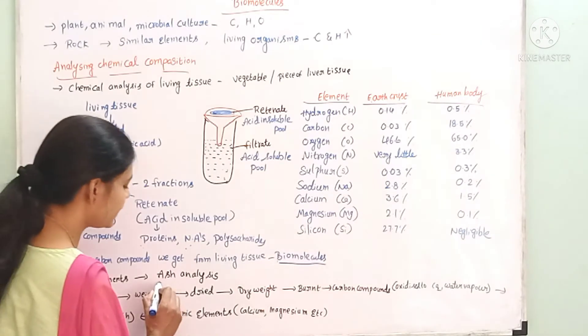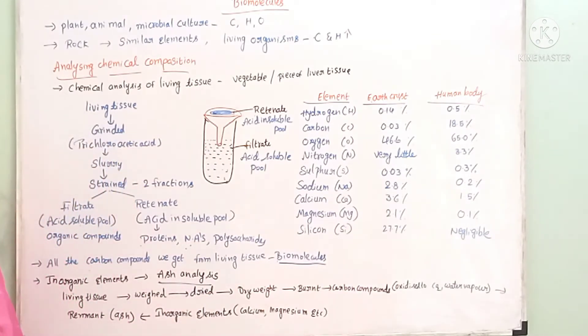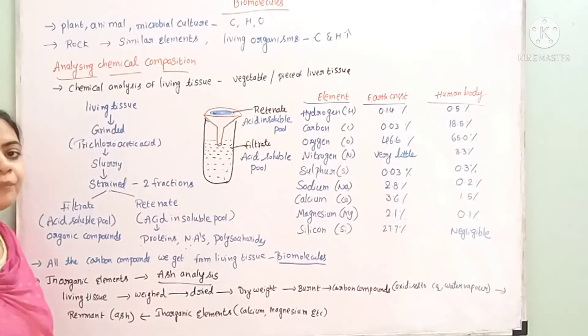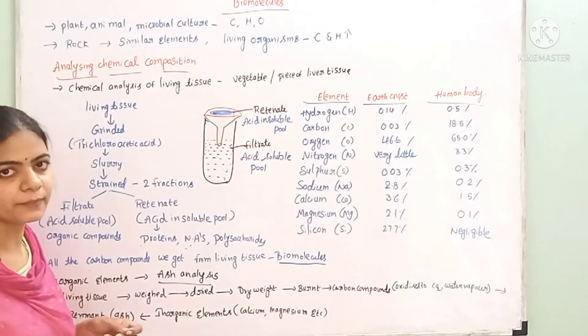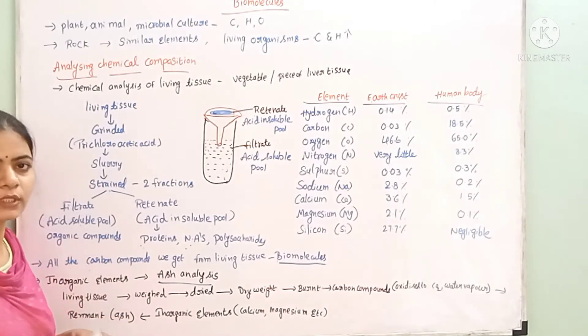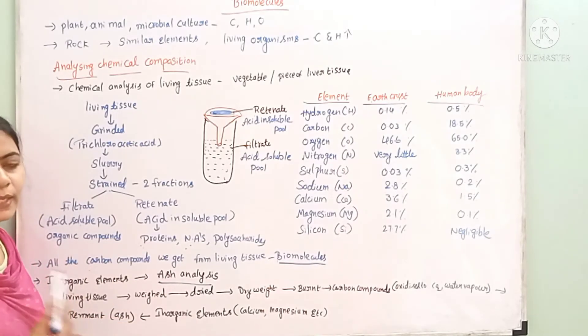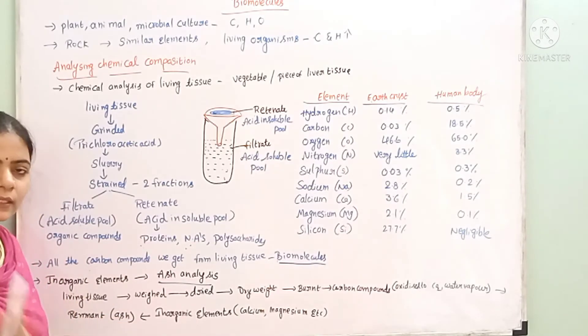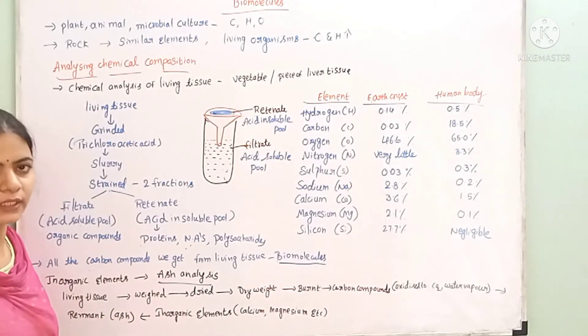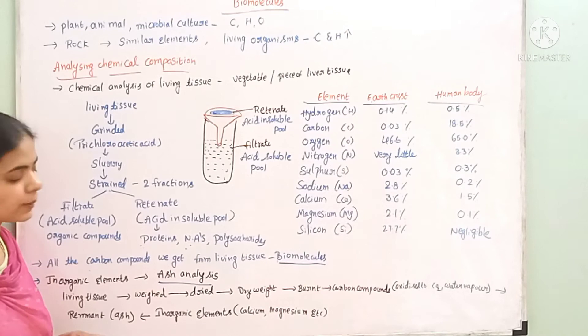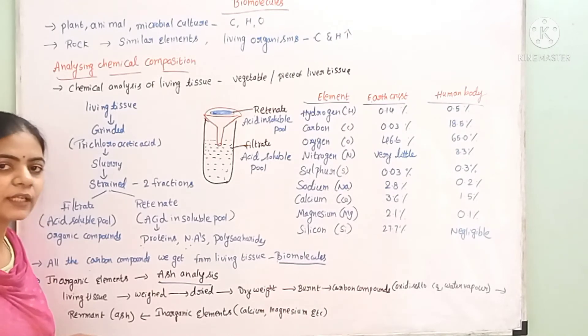By performing ash analysis. Ash analysis involves using plant material such as leaf or liver tissue. We can apply this to plant material and animal tissue.